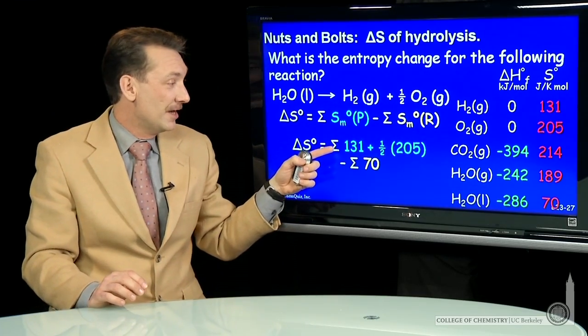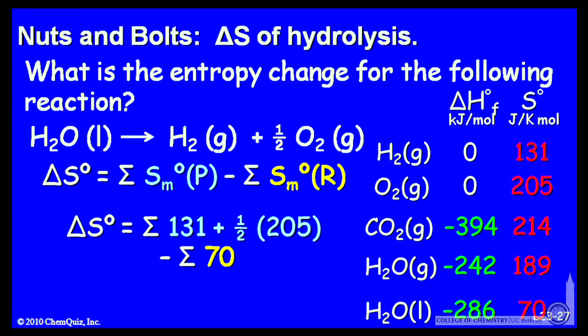So we can write the standard molar entropy of one mole of hydrogen gas, 131, half a mole of oxygen gas, so one half times 205, the standard molar entropy.